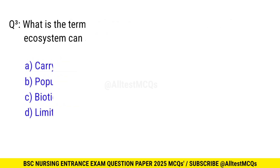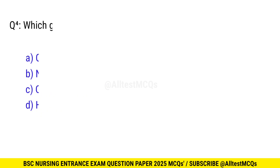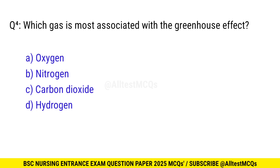Question No. 3: What is the term for the maximum number of individuals an ecosystem can support? The right option is A: Carrying Capacity. Question No. 4: Which gas is most associated with the greenhouse effect? The right option is C: Carbon dioxide.